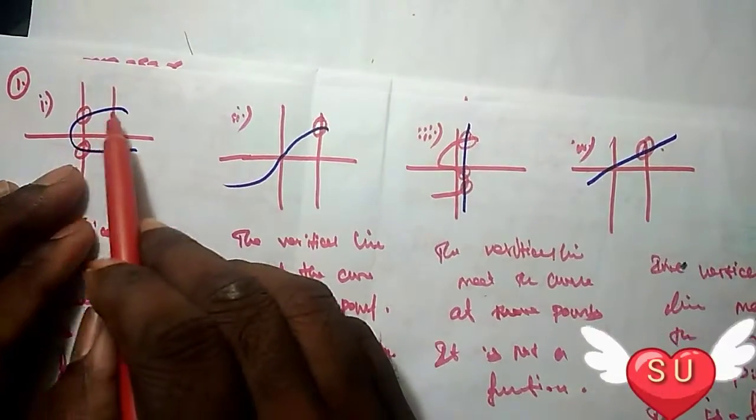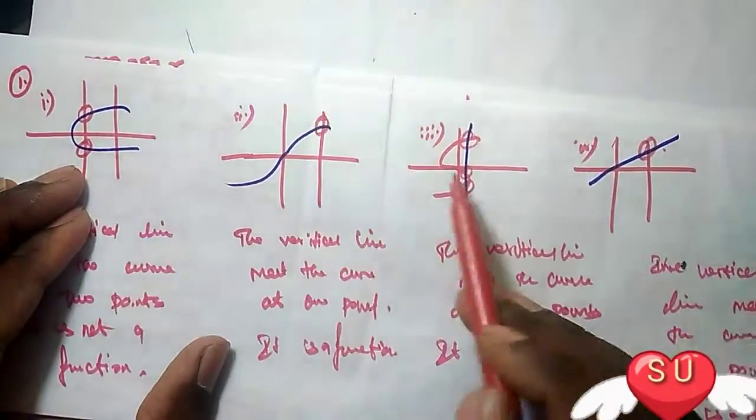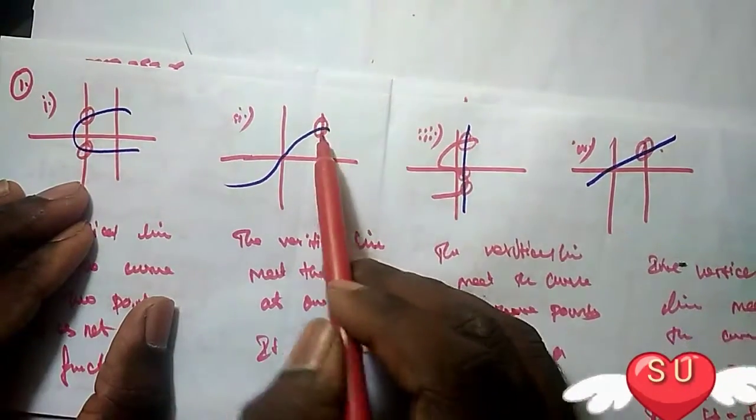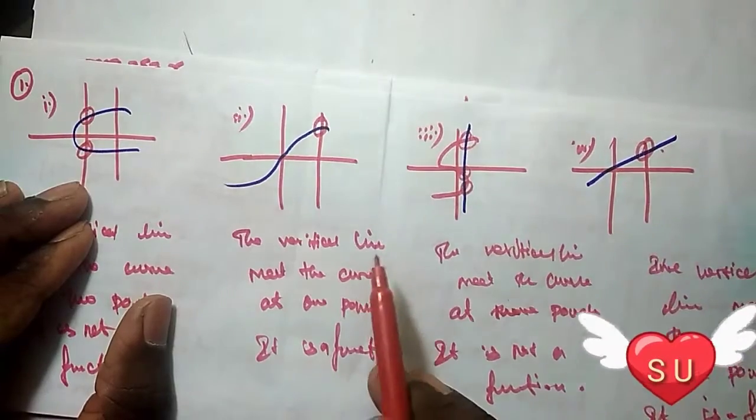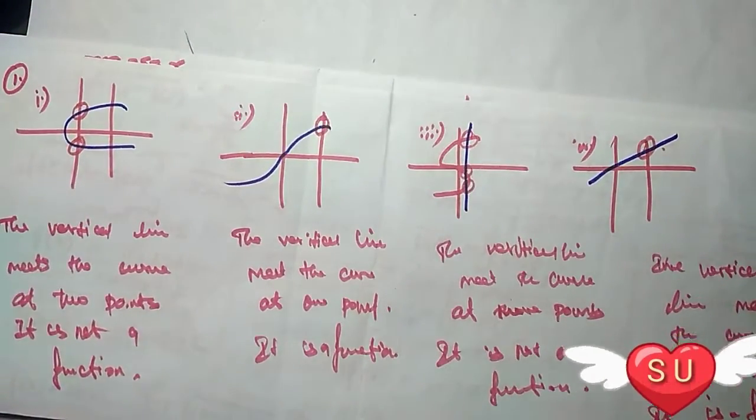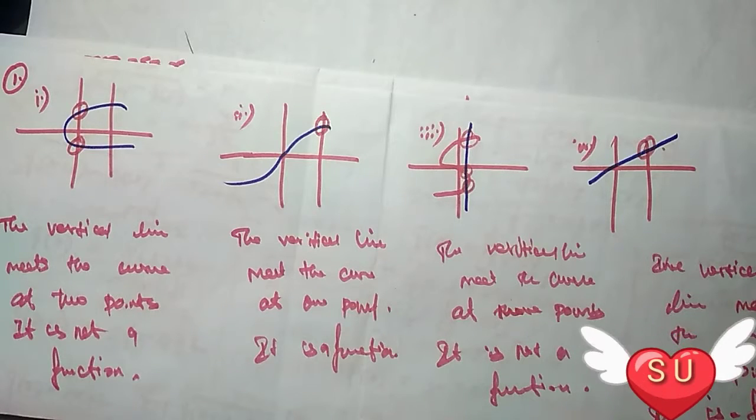Okay friends, so you know normally the curve and the line - when they meet at two points or three points or more than one point, it's not a function. When they meet at only one point, that is a function. Okay friends, this is your diagram.